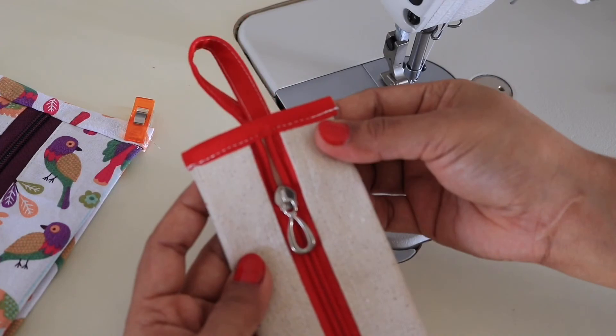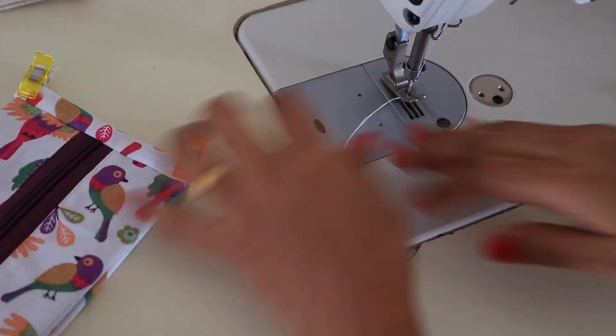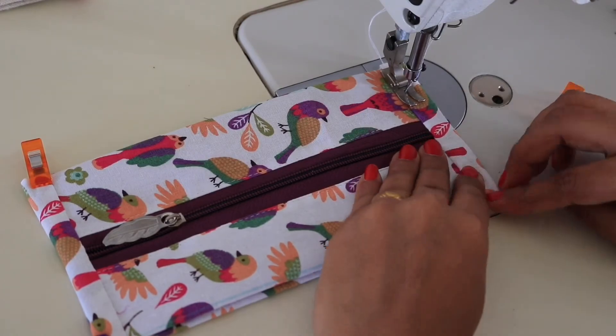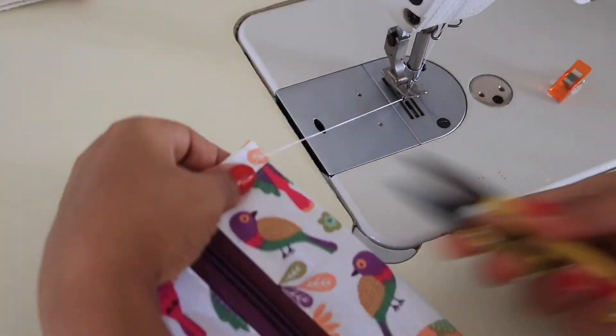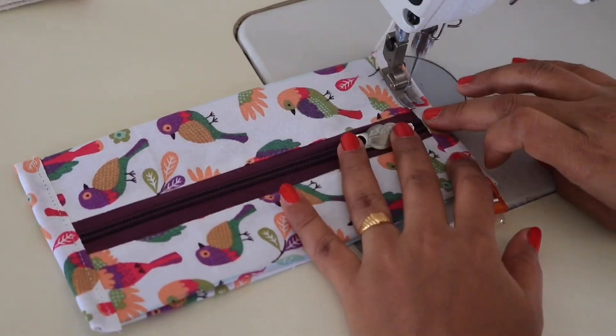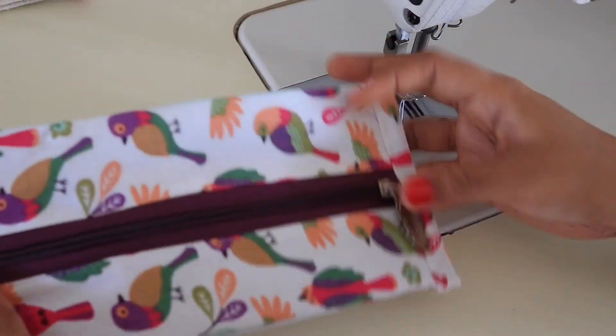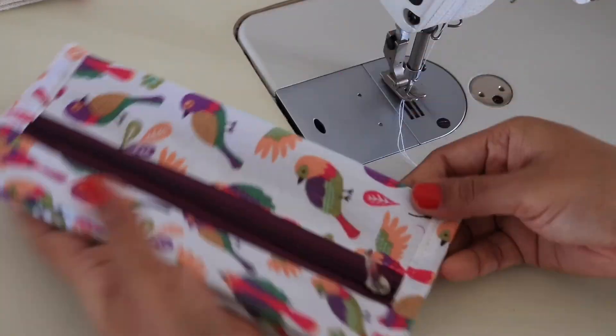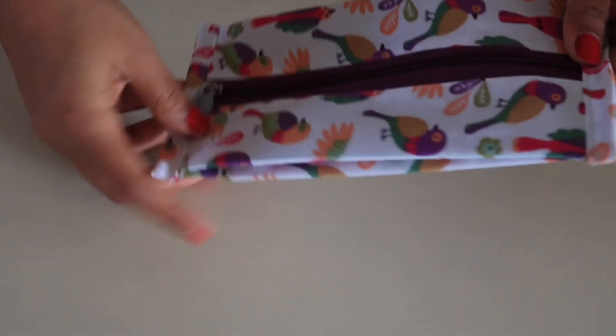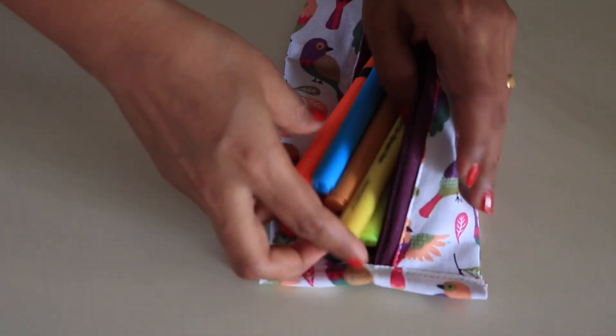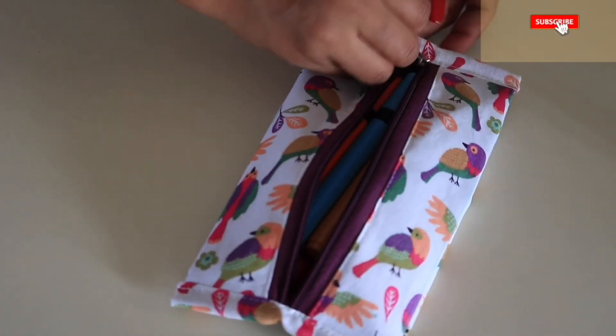So you can see I have attached the binding. Now I will quickly finish this also. No raw edges. And your new expandable pouch is ready. Throw your stuff inside and enjoy your new pouch. If you like today's tutorial, then please hit that like button and subscribe to my channel if you haven't. I'll see you again next week. Till then, take care. Bye bye.